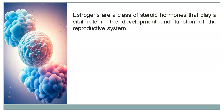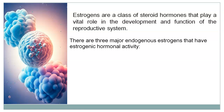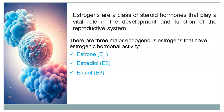Estrogens are a class of steroid hormones that play a vital role in the development and function of the reproductive system. There are three major endogenous estrogens that have estrogenic hormonal activity: estrone, estradiol, and estriol. Estrone is produced by adrenal glands and fatty tissues, primarily after menopause. Estradiol is produced mainly in the ovaries. Estriol is typically known as the estrogen of pregnancy and is present in only small amounts when non-pregnant.